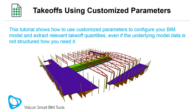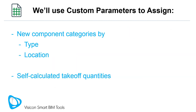This tutorial shows how to use customized parameters to configure your BIM model and extract relevant takeoff quantities even if the underlying model data is not structured how you need it. We'll use custom parameters to assign new component categories by type, location, and self-calculated takeoff quantities.